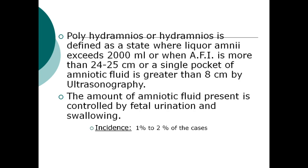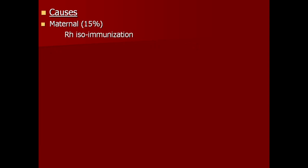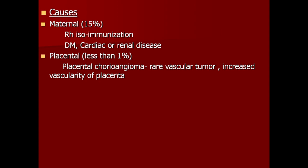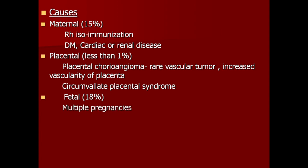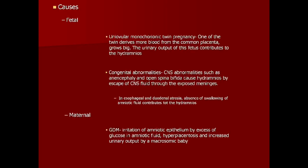The amount of amniotic fluid present is controlled by fetal urination and swallowing. Incidence is nearly 1 to 2 percentage of cases. Causes: maternal causes constitute 15%, including Rh isoimmunization, diabetes mellitus, cardiac disease. Placental causes are less than 1%, like placental chorioangioma. Fetal causes constitute nearly 18%, including multiple pregnancies with anomalies like anencephaly, open spina bifida, and facial defects. Idiopathic causes constitute 65%.